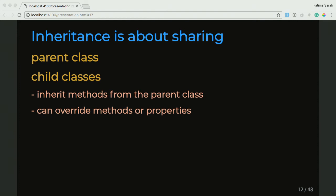So this is inheritance. There's a parent class that defines a certain amount of things. There's a child class that can inherit all of those things and then also define its own things and be unique in that way, but also override things that its parent has defined.